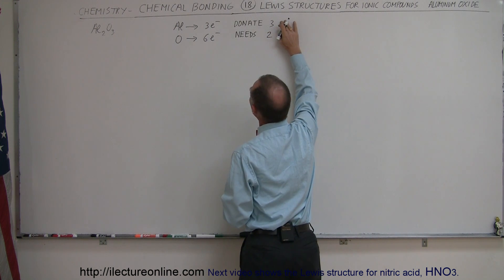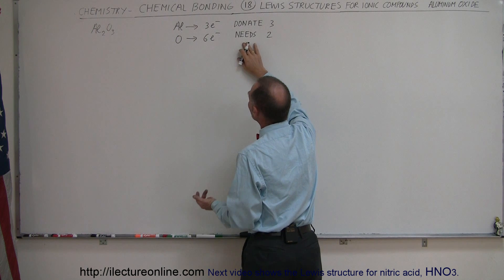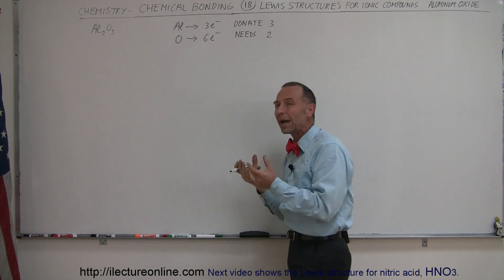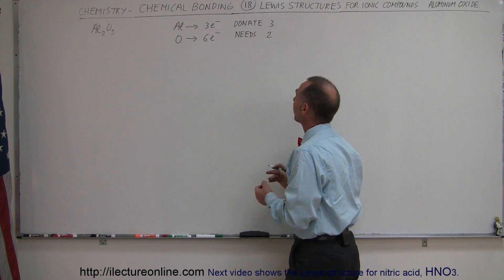Which means if we have two aluminum atoms they can then donate six. If you have three oxygen atoms they can then receive six and so that's why the relationship between two aluminum and three oxide forms a molecule like that.